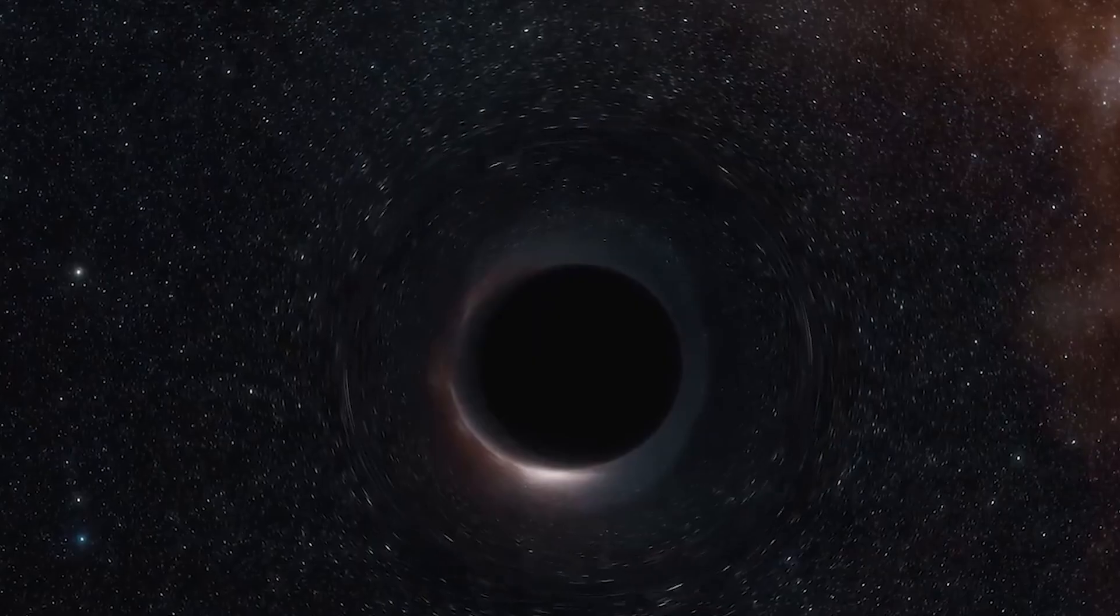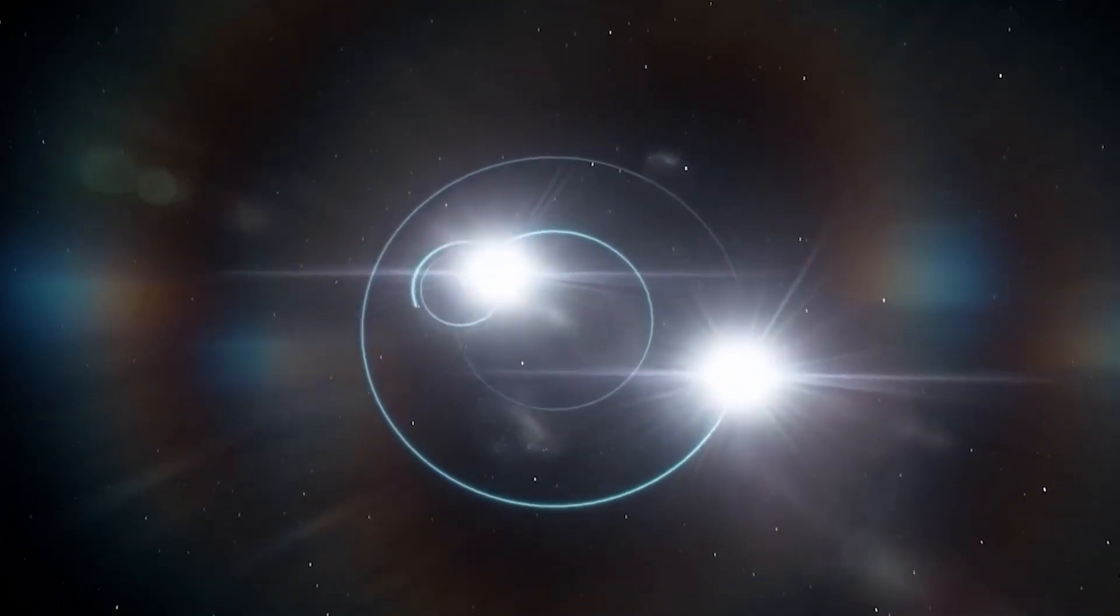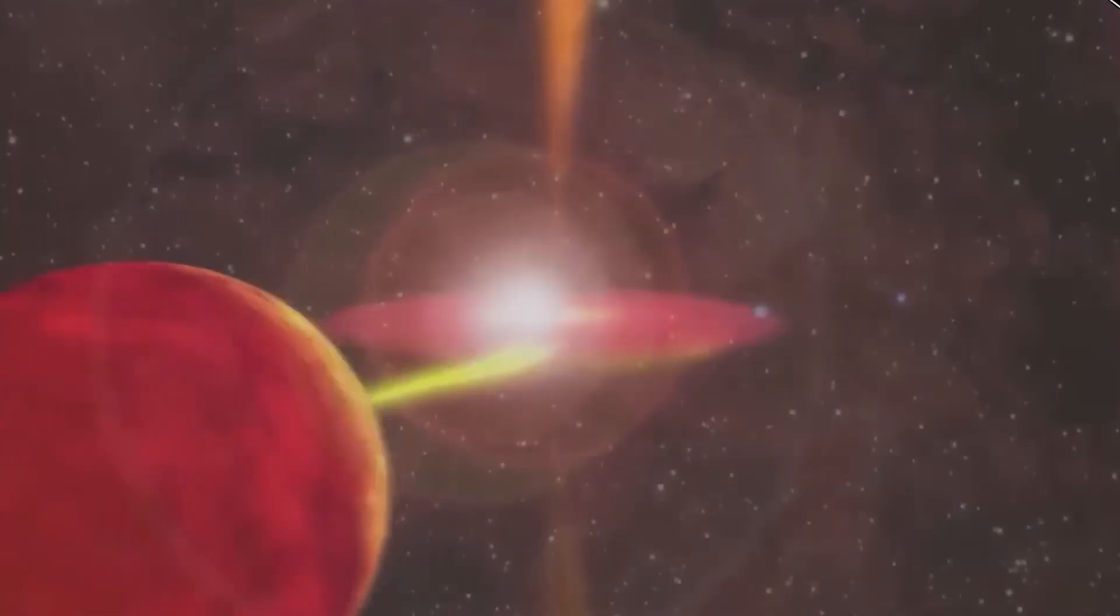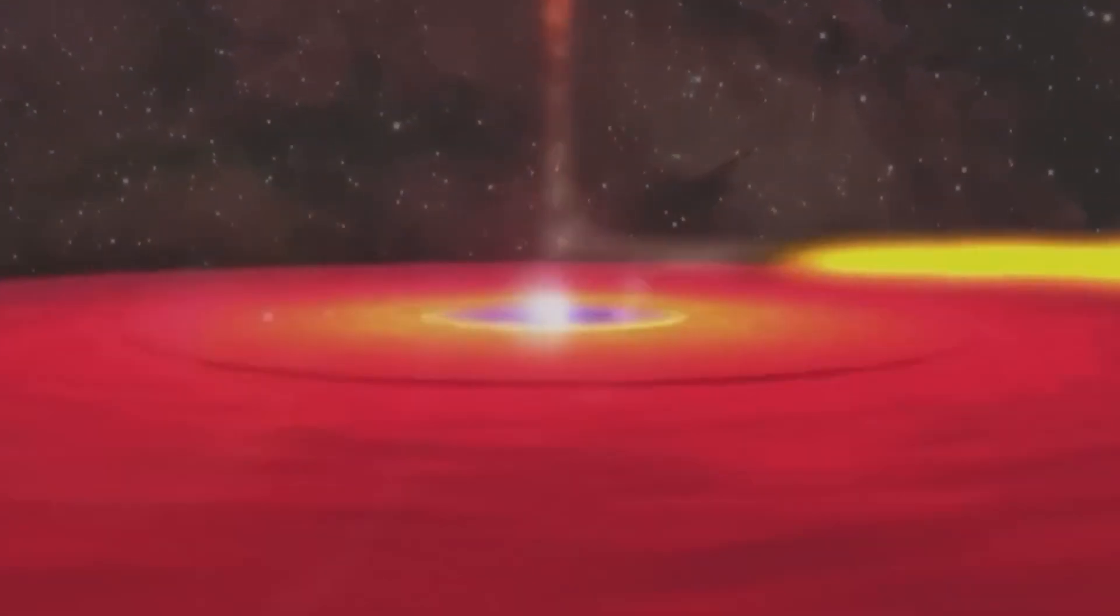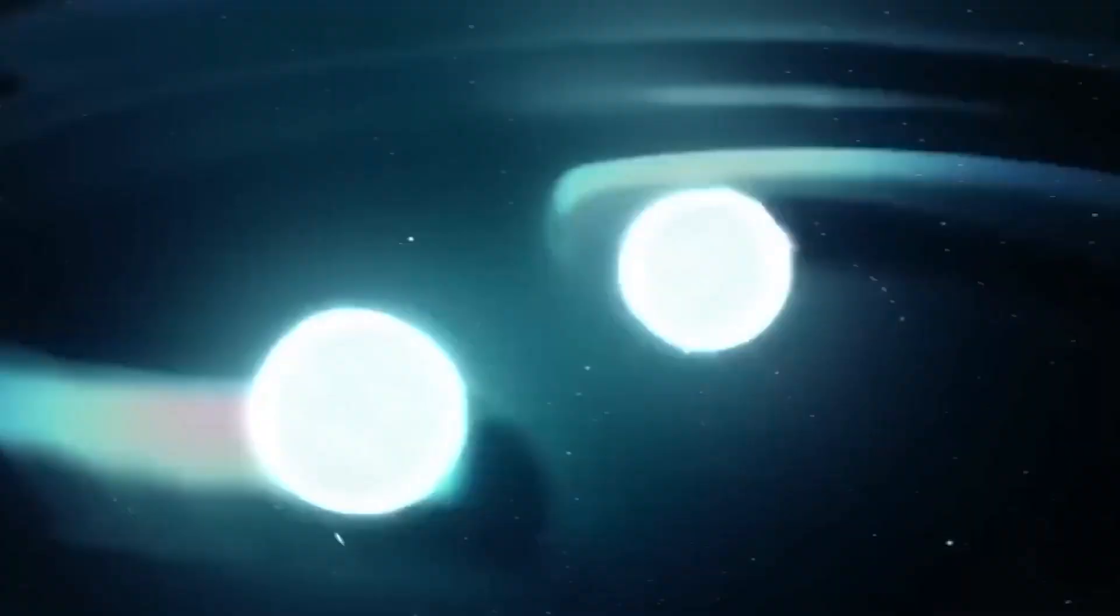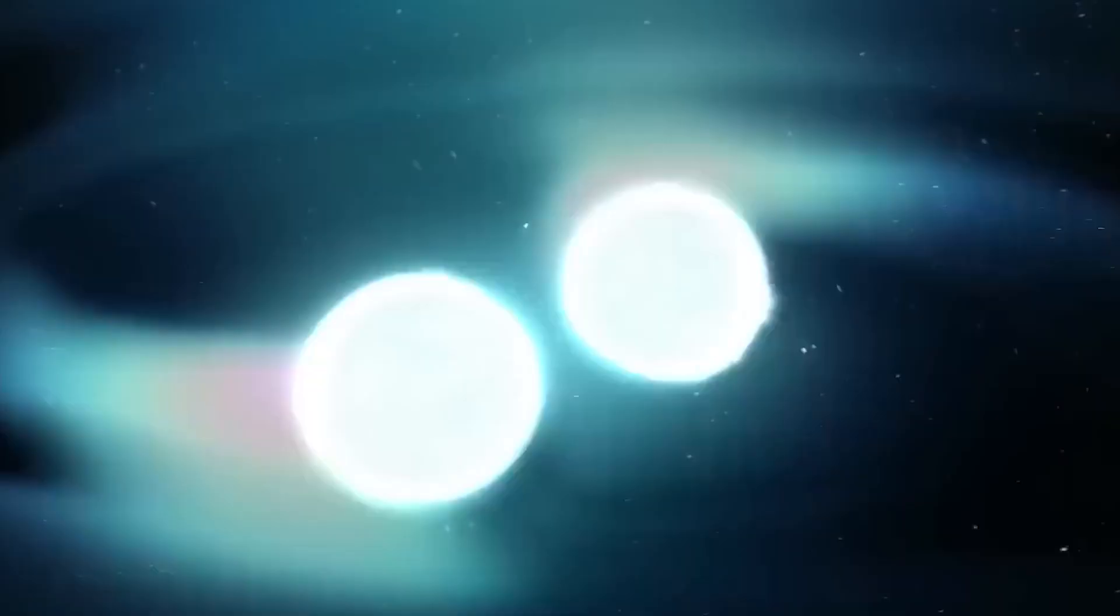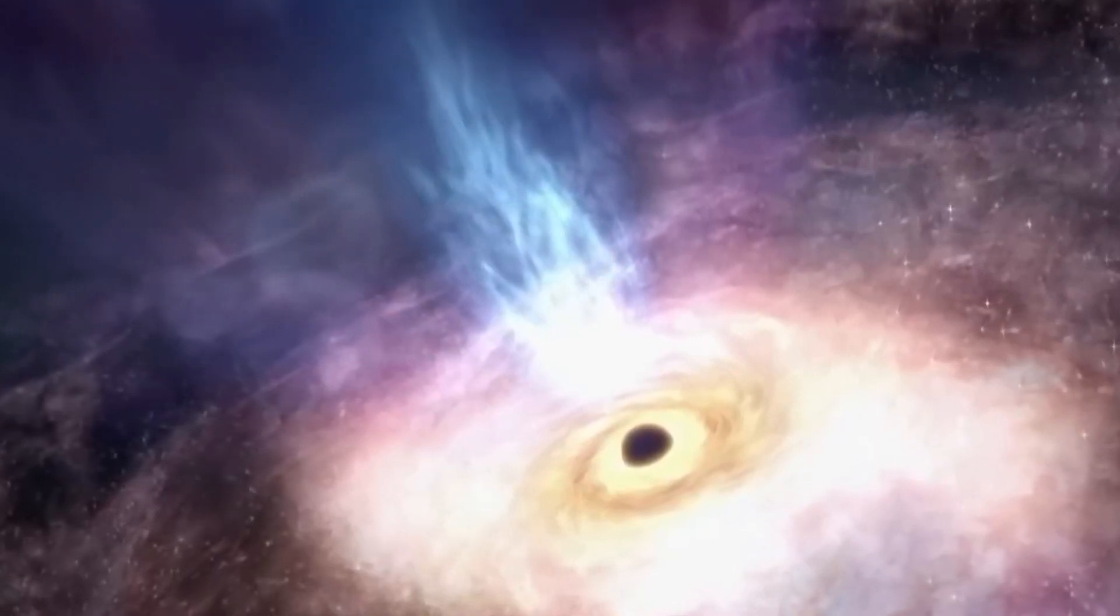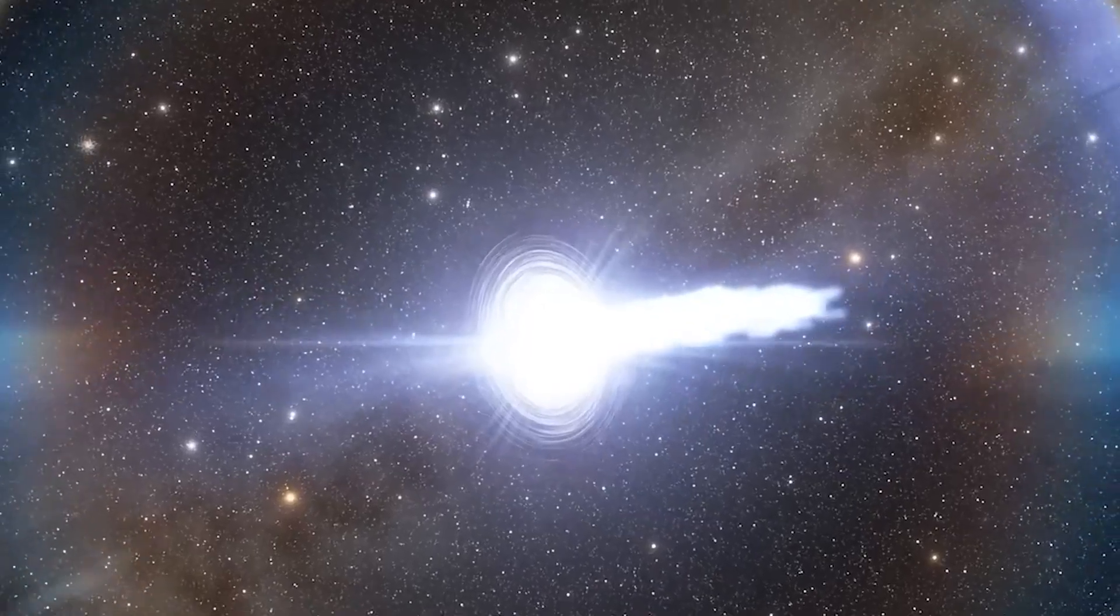This allowed the scientists to create a new image of the black hole that shows not just the bright disk of gas and dust around it, but also the magnetic fields that are driving the material around the black hole. The image shows that the magnetic fields around the black hole are incredibly powerful, with some of them being a billion times stronger than the magnetic fields on the surface of the Earth.